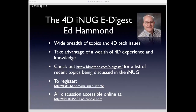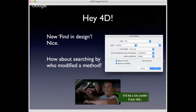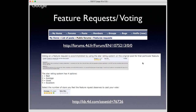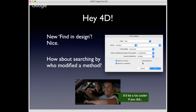Thanks, Ed. Between the forums and the iNug, if you can't find someone who's already experienced your problem, you'll certainly find someone to discuss it with — there's a wealth of knowledge out there. Our next segment is Hey 4D! There's been some new development in R2, 16R2, on the new find and design interface with a couple of new capabilities. How about also being able to search by who modified a method, or what methods were modified in the last so many days by somebody? That would make it easier to track activity in the application. As usual, it'd be a lot cooler if you did.